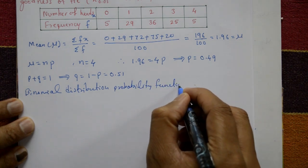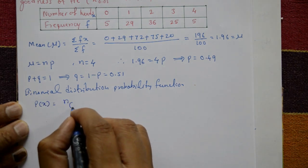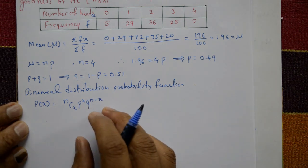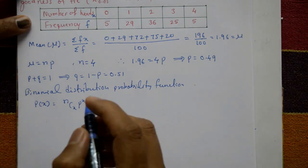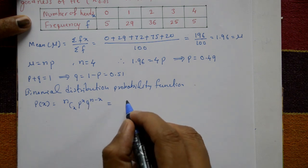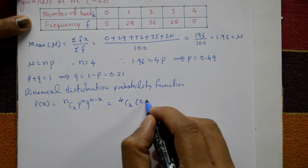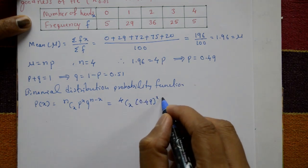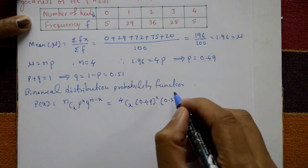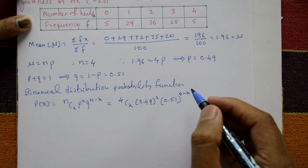The binomial probability function is given by P(x) equals nCx times p raised to x times q raised to n minus x. With our values, n equals 4, p equals 0.49, and q equals 0.51, so P(x) equals 4Cx times 0.49 raised to x times 0.51 raised to 4 minus x.